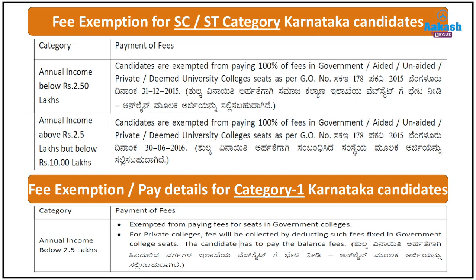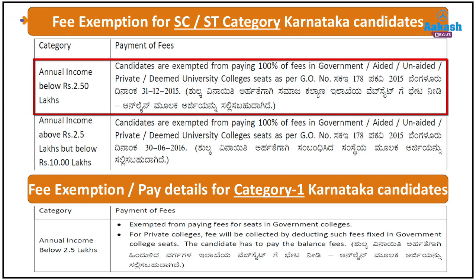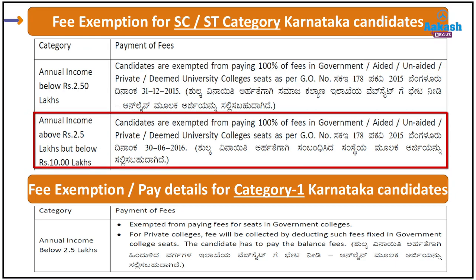It is also important to know about fee exemption. For SC/ST category Karnataka candidates with annual income below 2.50 lakh, as per notification dated 31st December 2015, candidates are exempted from paying 100% of fees in government, aided, unaided private, and deemed university college seats as per G.O. number 178/2015. A subsequent notification dated 30th June 2016 covers SC/ST candidates with annual income above 2.5 lakh but below 10 lakh, granting the same 100% fee exemption.